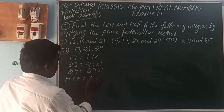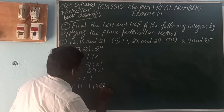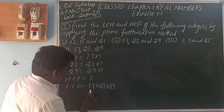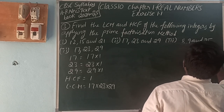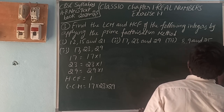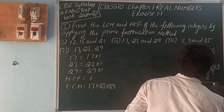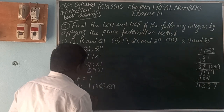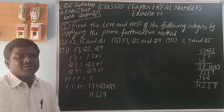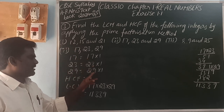HCF: the common factor here is 1, since 17, 23, and 29 are all prime numbers. For LCM, we take the highest multiple of all prime factors: 17 into 23 into 29. So 17 into 23 = 391, and 391 into 29 = 11339. So LCM is 11339 and HCF is 1 for 17, 23, and 29. All are prime numbers.